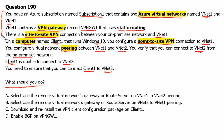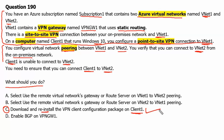This question is divided into two parts. The first part is where Client1 configured a point-to-site VPN connection to VNet1, and later on we configured network peering between VNet1 and VNet2. That's why the change is not reflecting on Client1 — its VPN client has not been reconfigured or updated. Therefore, option C — download and reinstall the VPN client configuration package on Client1 — is the correct answer.